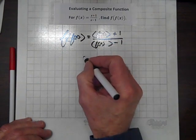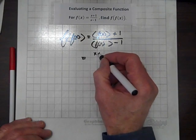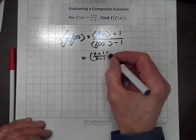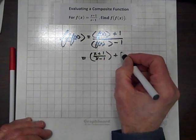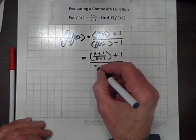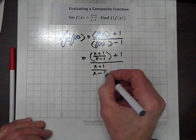And this equals x plus 1 over x minus 1, because that is f of x, divided by x plus 1 over x minus 1.